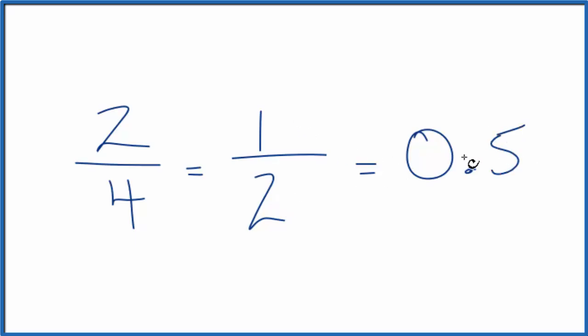If you divide 1 by 2, you get 0.5. 2 by 4, 0.5. They're equivalent fractions.